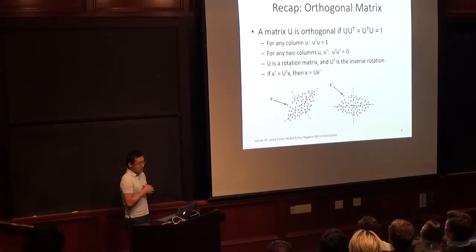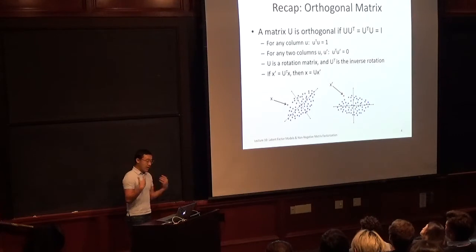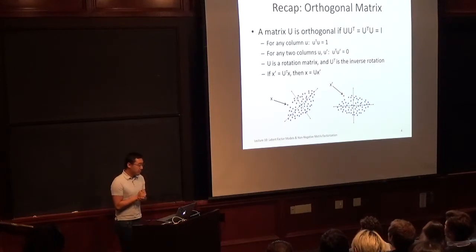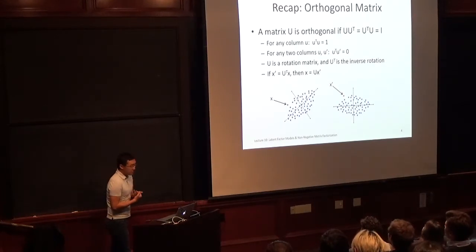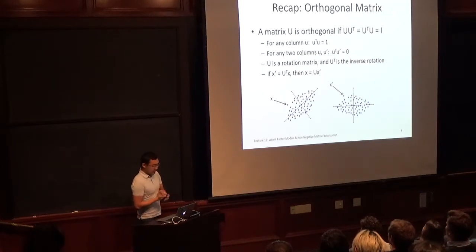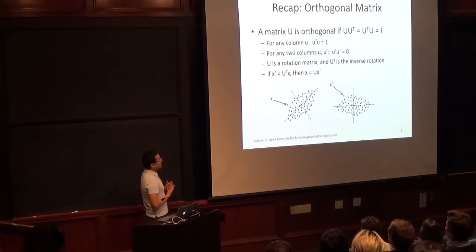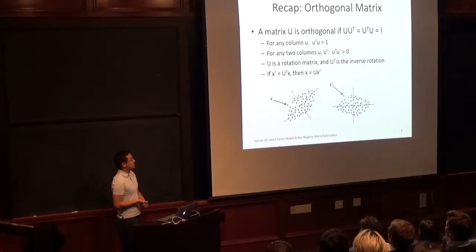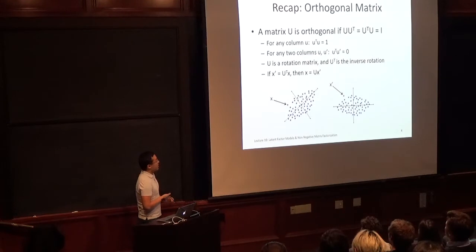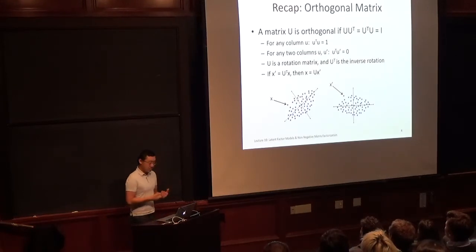U can be interpreted as a rotation matrix, and Uᵀ is its inverse rotation. If X' equals Uᵀ X, then X' has been rotated to a new coordinate system. We can reverse that rotation by multiplying X' by U to get X back.